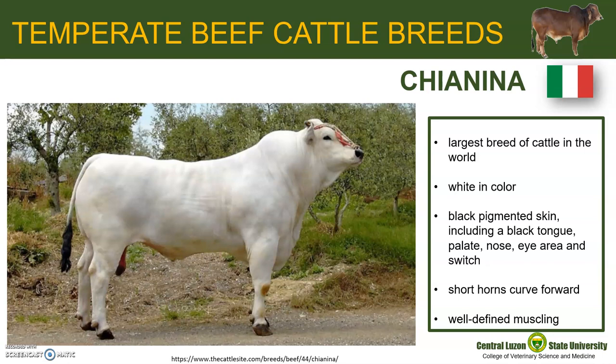Chianina is the largest breed of cattle in the world and has short hair that varies from white to steel gray in color. Both sexes have black pigmented skin including a black tongue, palate, nose, eye area, and switch. They have short horns that curve forward, usually black in younger animals but become lighter beginning at the base as the animals mature. The most noticeable characteristic of the breed is the extensive and well-defined muscling. Chianina originated in Italy.